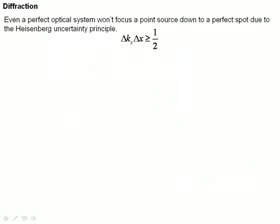And the reason even perfect optical systems won't focus down to a point is due to the Heisenberg uncertainty principle. We're not going to cover this very much in this class. We'll learn a lot more about this in the follow-on class that studies laser systems.